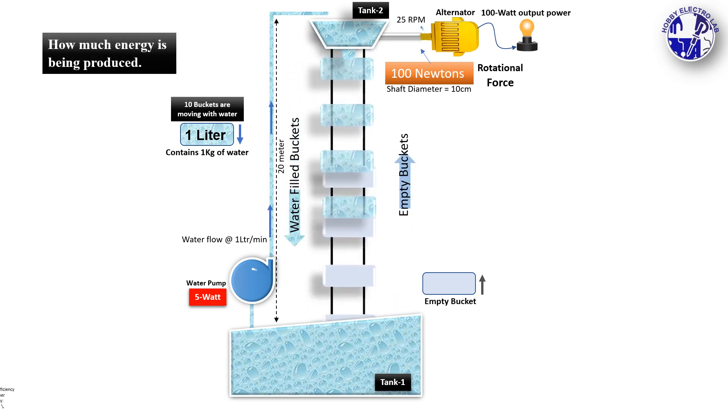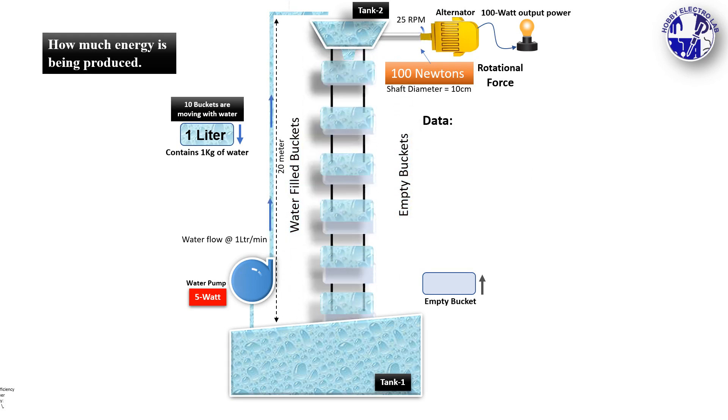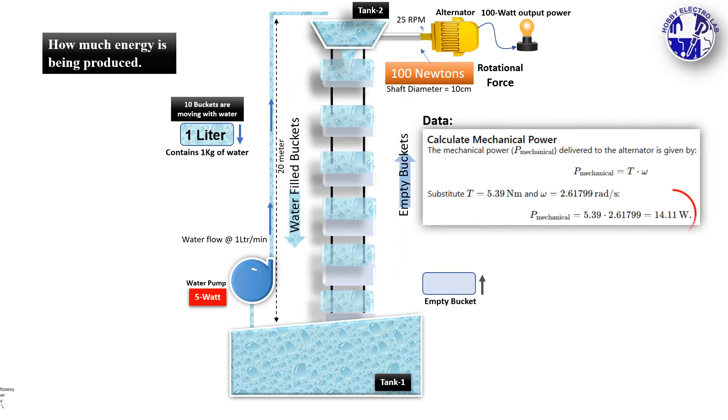There are 20 buckets moving in the system. Half of these buckets are always filled with 1 liter of water each, while the other half remain empty. The filled buckets constantly move downward due to gravity, exerting force on the shaft.